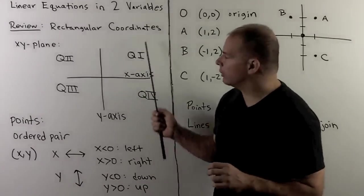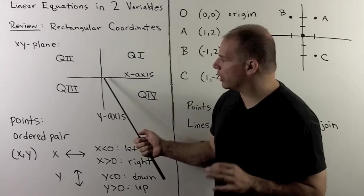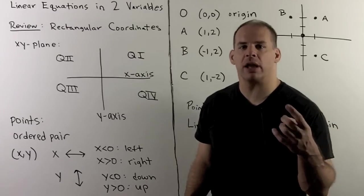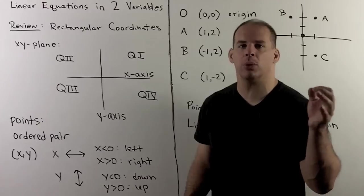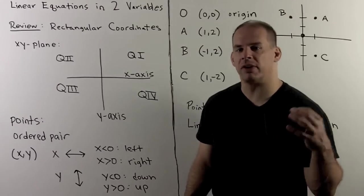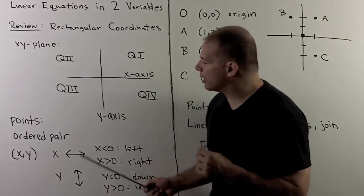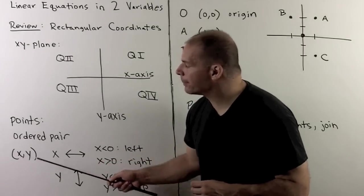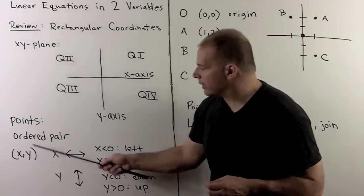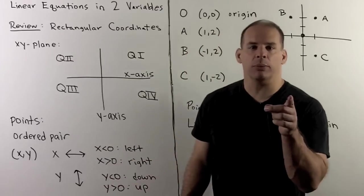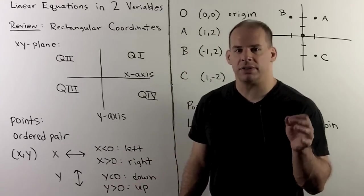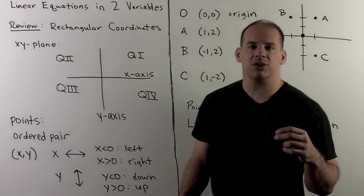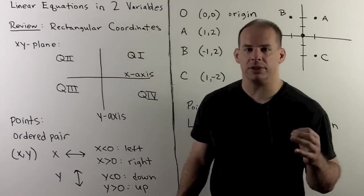We have the x-y plane with a distinguished point called the origin. Rectangular coordinates give us directions for how to move from the origin to our points of interest. We assign an ordered pair (x, y) to each point. The x value, the first coordinate, tells us how we move left or right relative to the origin. The second coordinate, the y value, tells us how we move up and down relative to the origin.